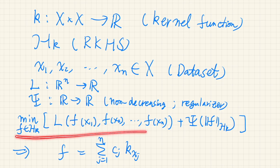The representer theorem says, for this minimization problem, we may assume the optimal function f to have this form, which is a linear combination of the reproducing kernels parameterized by the data points.